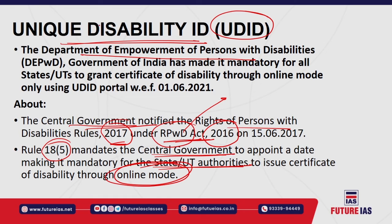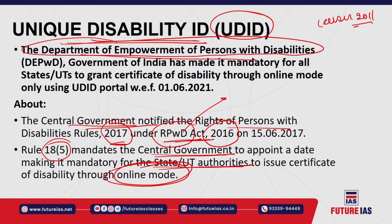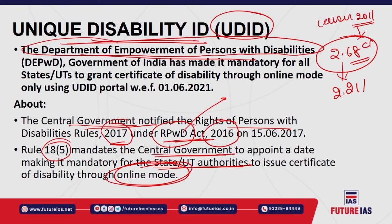The Department of Empowerment of Persons with Disabilities under the Ministry of Social Justice and Empowerment facilitates empowerment of persons with disability. As per Census 2011, around 2.68 crore people, corresponding to approximately 2.21% of the total population, are persons with physical disability. This includes persons with visual disability, hearing or speech disability, locomotive disability, mental retardation, mental illness, or multiple disabilities. The UDID project has been under implementation since 2016.